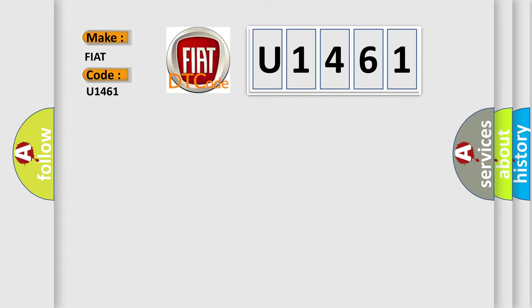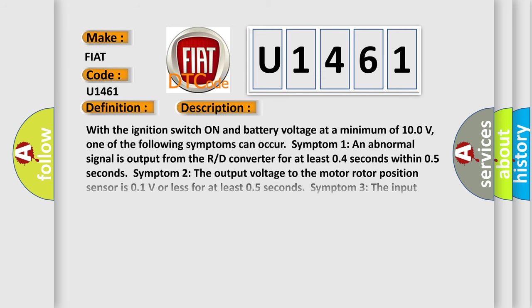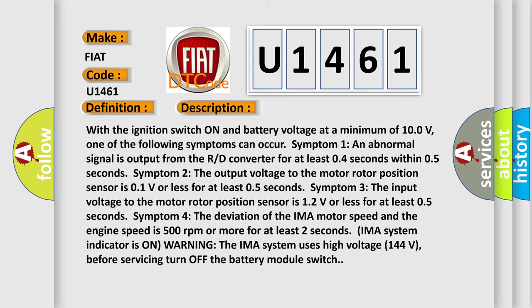The basic definition is: Motor rotor position sensor circuit malfunction — hybrid models. With the ignition switch on and battery voltage at a minimum of 100 volts, one of the following symptoms can occur. Symptom 1: An abnormal signal is output from the resolver for at least 0.4 seconds within 0.5 seconds. Symptom 2: The output voltage to the motor rotor position sensor is 0.1V or less for at least 0.5 seconds.